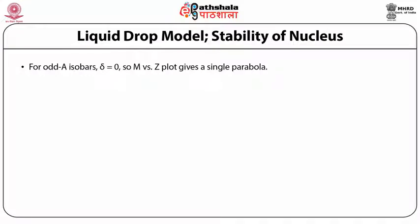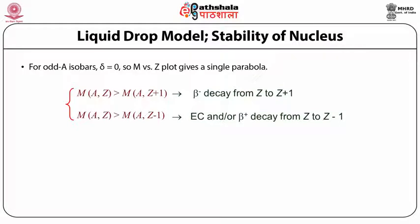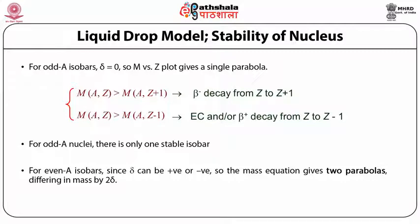For odd-A nuclei, delta = 0, so the M versus Z plot gives a single parabola. When M(A,Z) > M(A,Z+1), β⁻ decay from Z to Z+1 occurs — this condition is satisfied for nuclei on the left arm of the parabola. When M(A,Z) > M(A,Z−1), electron capture or β⁺ decay from Z to Z−1 occurs — satisfied for nuclei on the right arm. For odd-A nuclei there is only one stable isobar. For even-A isobars, since delta can be positive or negative, the mass equation gives two parabolas differing in mass by 2δ.